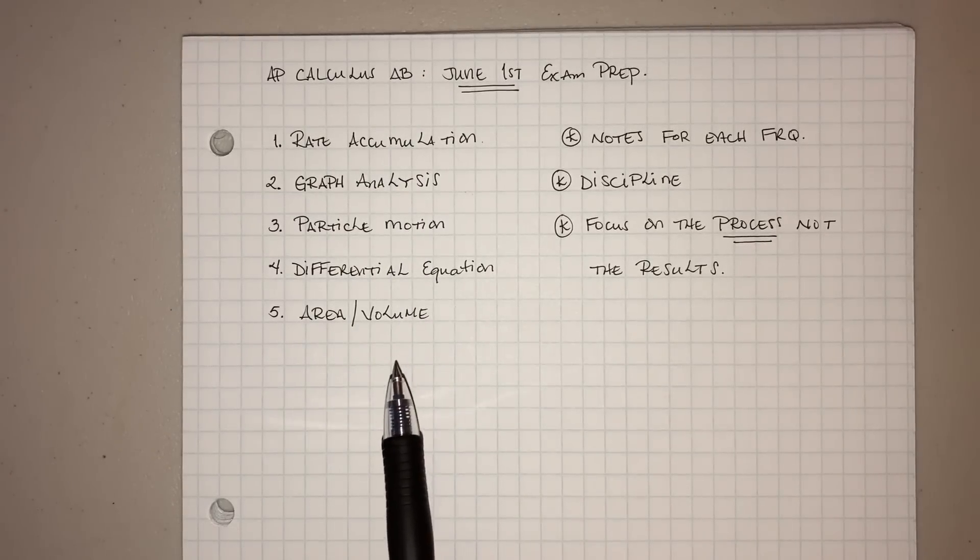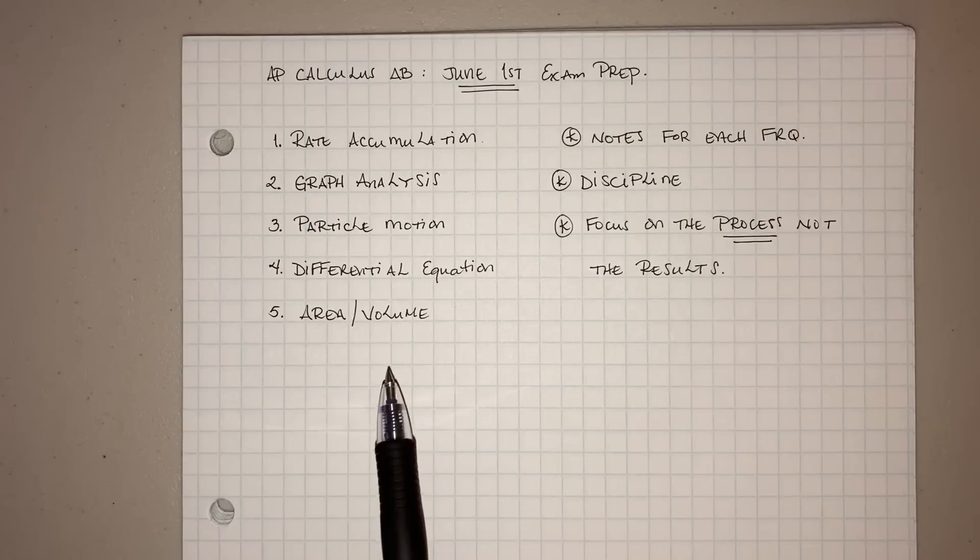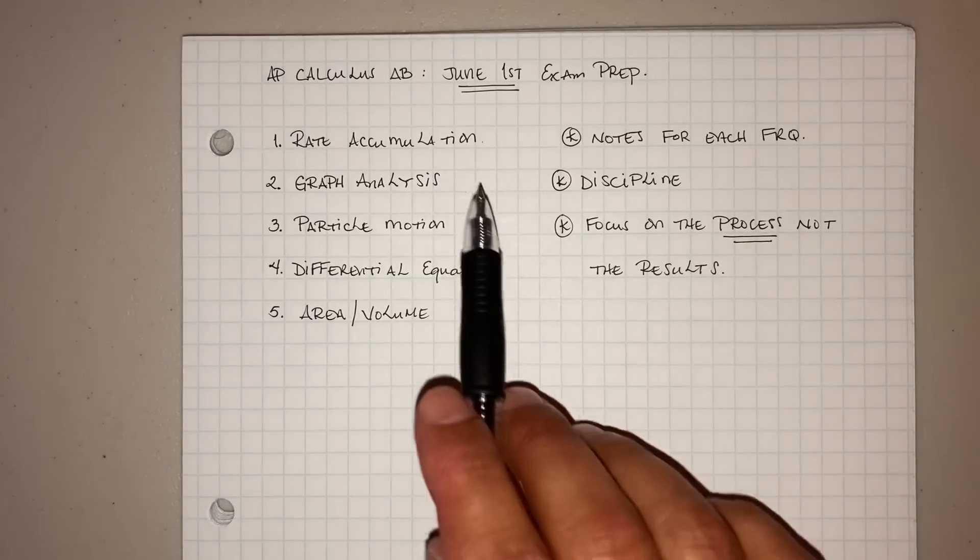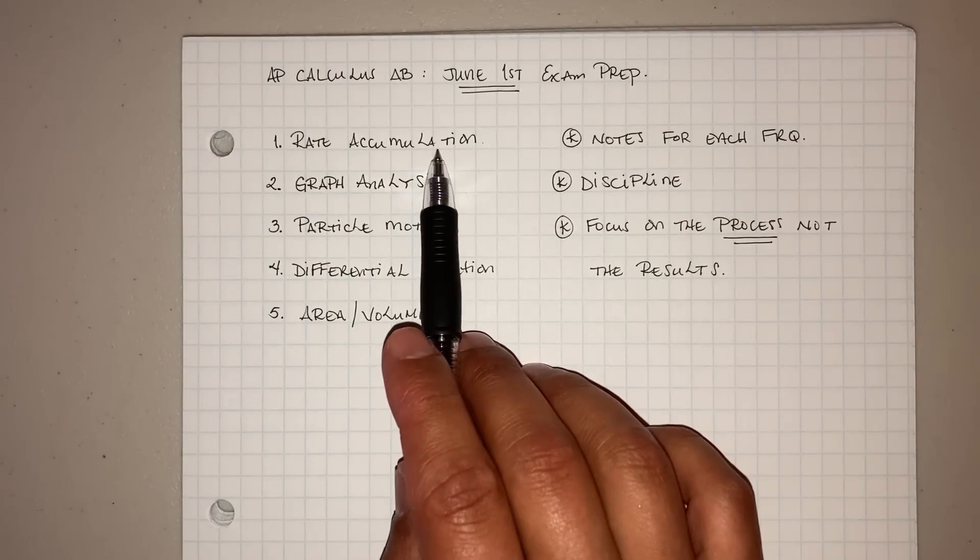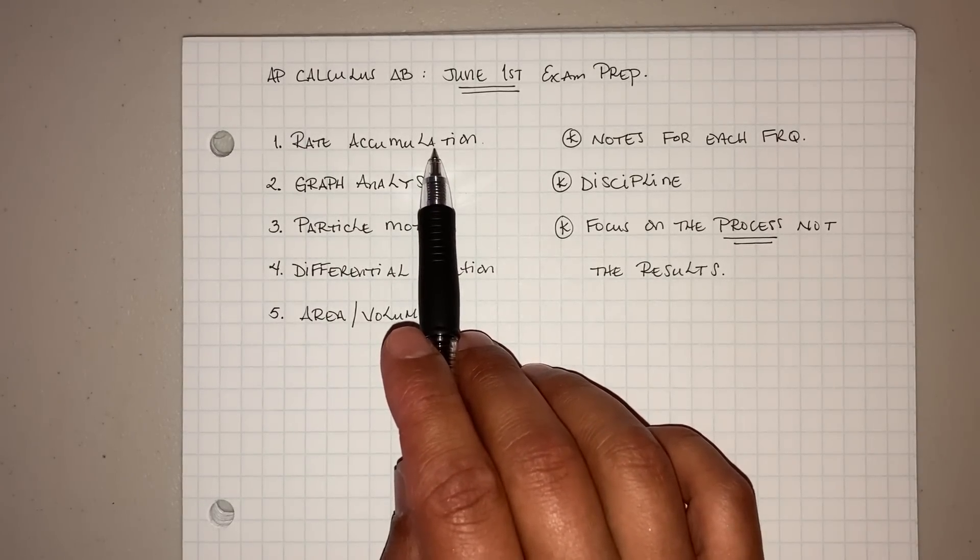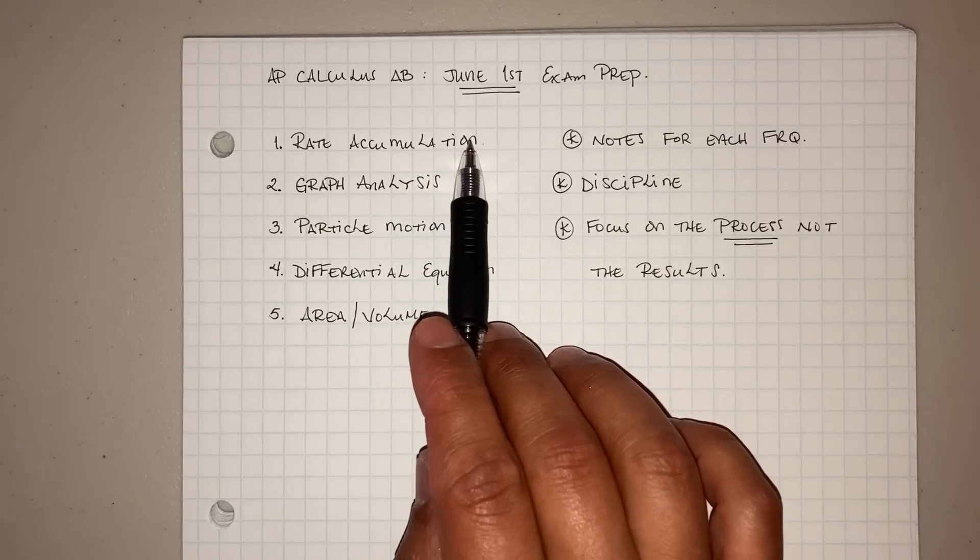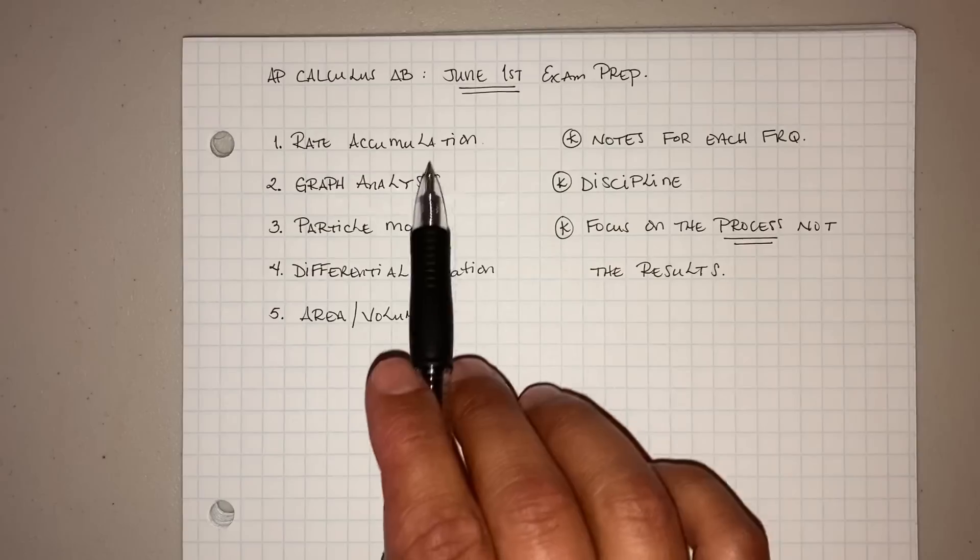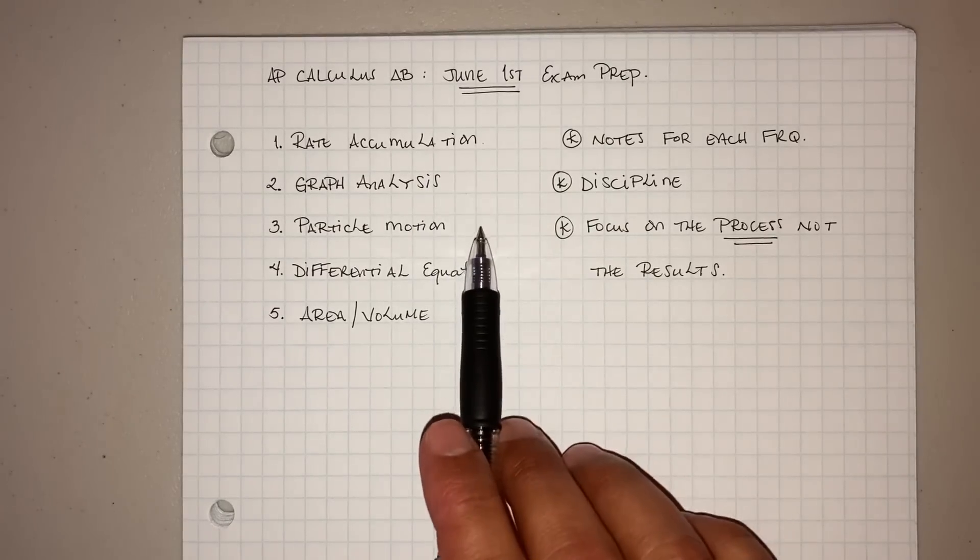But all these here are fair game. Now, it's the makeup for June 1st. I don't know how they're going to do it. But we do know some things. We do know that when you do rate accumulation, there's certain type of questions they ask. Same thing with graph analysis. Same thing with particle motion.